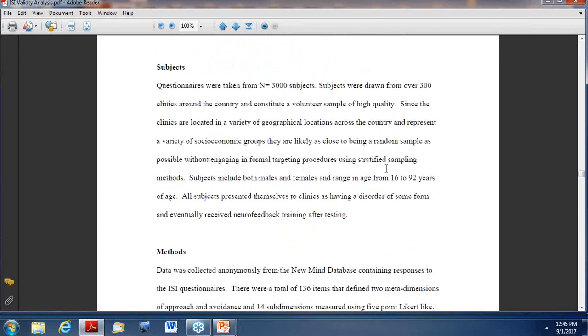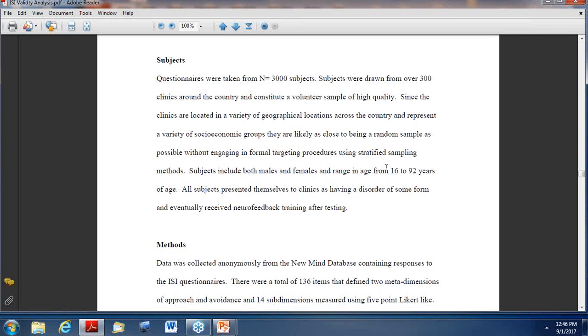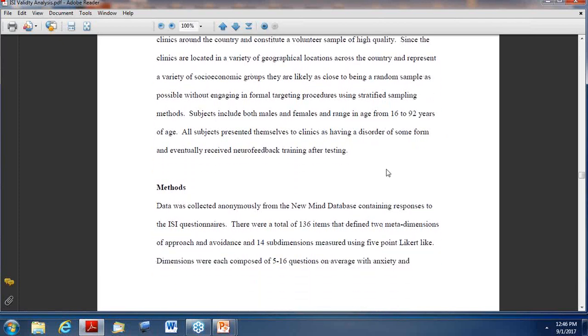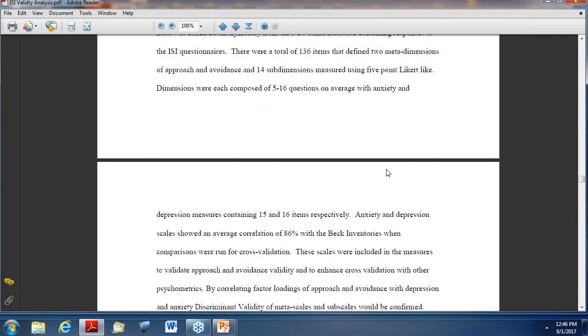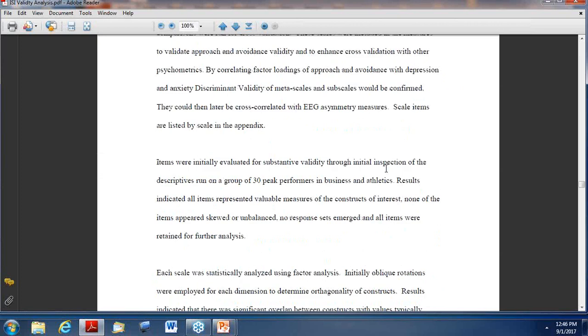So, to set up the ISI as you're now using it, we used an N of 3,000, which is a very good N size for the type of statistical measures we were using. But, in general, these 3,000 people came from hundreds of clinics across the United States. So, we know it's a very good sample. And it's probably one of the better samples I've seen on this kind of work. Subjects were males and females, 16 to 92 years of age. And we have 136 items that define two meta dimensions. 14 dimensions were approach and avoidance dimensions, which are social psychological. And then we have the anxiety and depression. Okay.